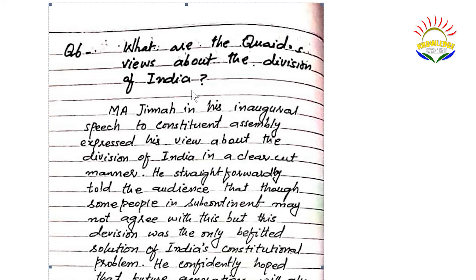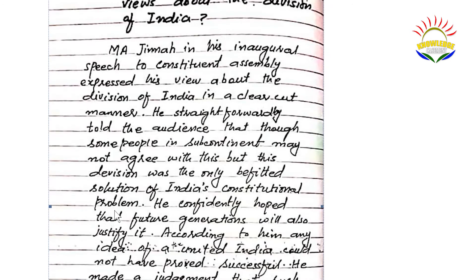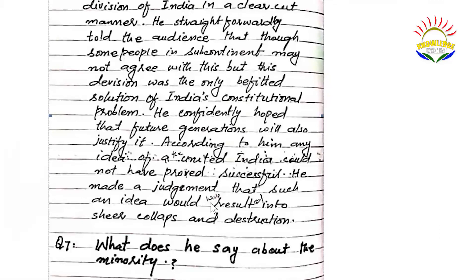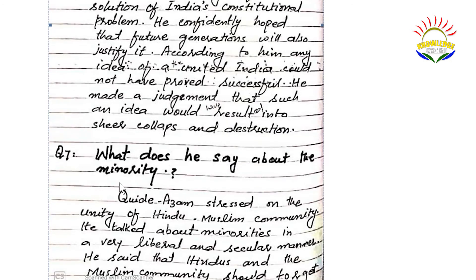Question number six: what are Quaid-e-Azam's views about the division of India? M.A. Jinnah in his inaugural speech to the constituent assembly expressed his view about the division of India in a clear-cut manner. He straightforwardly told the audience that though some people in the subcontinent may not agree with this, this division was the only befitting solution — meaning appropriate and suitable — to India's constitutional problem. He confidently hoped that future generations will also justify it. According to him, any idea of a united India could not have proved successful, and such an idea would have resulted in sheer collapse and destruction.